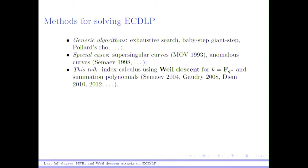First, we have generic algorithms that work for any finite abelian group, such as exhaustive search, baby-step giant-step, Pollard's rho method, and many others. The second class works only on specific types of curves, namely supersingular curves or anomalous curves. Today I want to focus on a third type of elliptic curves, namely those defined over F_{q^n}, where you can use Weil descent attacks. This was first developed by Semaev, Gaudry, Diem, and many others.